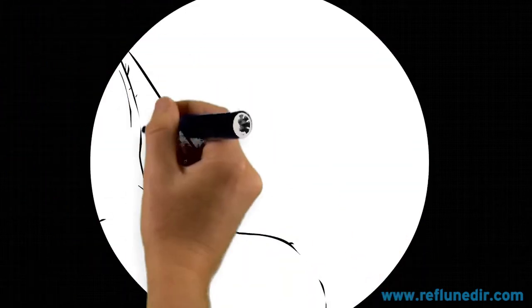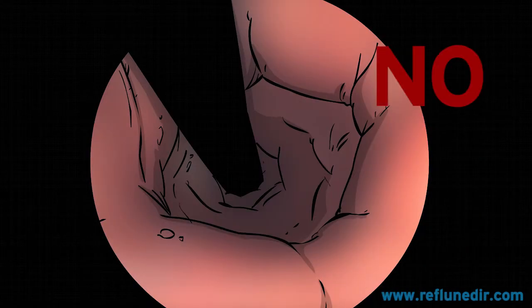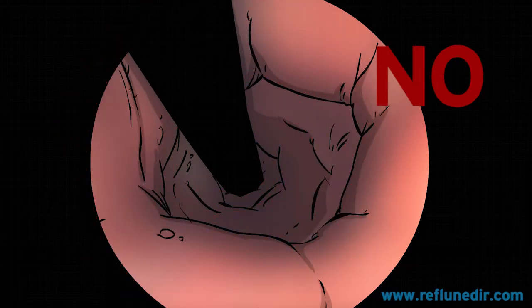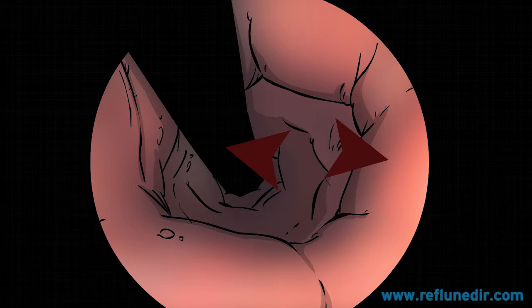If the gastric valve is not functioning as in the case of a hiatal hernia, the inner view is like this. The valve does not grasp the endoscope and this creates a gap between the two. So the valve effect is lost.